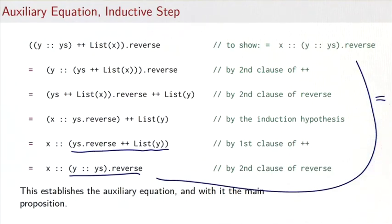The auxiliary equation is established, and because it was the last thing needed to prove the main proposition that xs.reverse.reverse equals xs, we are done.